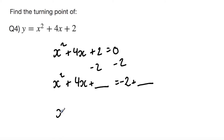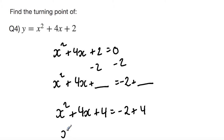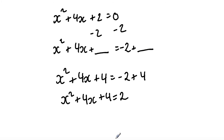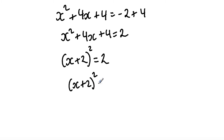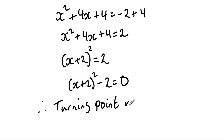Rewriting: x squared plus 4x plus 4 equals -2 plus 4, which simplifies to x squared plus 4x plus 4 equals 2. This forms a perfect square, which can be rewritten as (x plus 2) squared equals 2. Subtracting 2 from both sides gives (x plus 2) squared minus 2 equals 0. Therefore the turning point is (-2, -2).